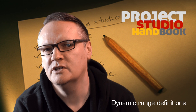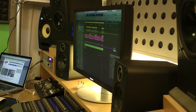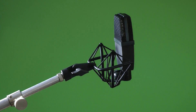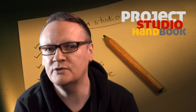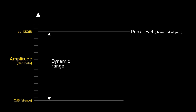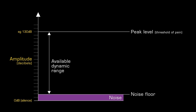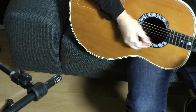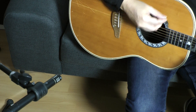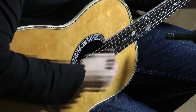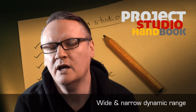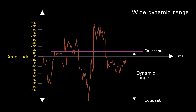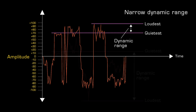Dynamic range doesn't just refer to human hearing — it can refer to any system that handles sound waves, or to sound itself. The term dynamic range can be used to express: the difference between silence and peak level; the difference between the noise floor and peak level; the difference between the quietest and loudest parts of a sound wave; and finally, the difference between the quietest and loudest sounds that a musical instrument or sound source can generate. If the dynamic range difference is large, it is said to be wide, and if it is small, it is said to be narrow.